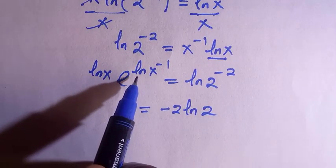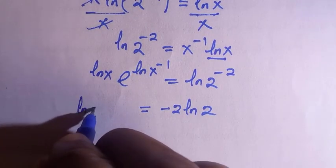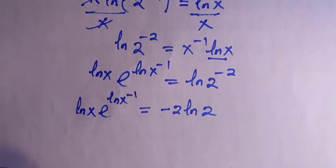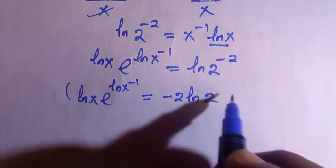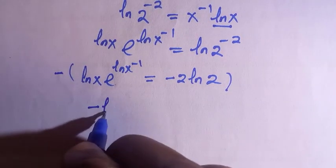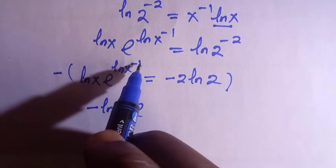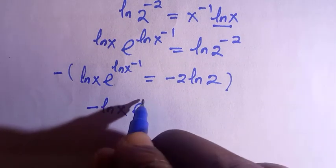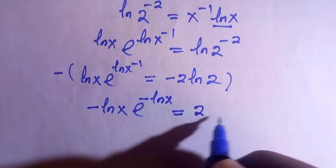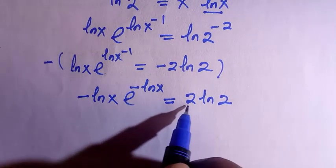For the x term, the power of minus 1 — applying the law of logarithm — becomes x to the power of minus 1. Introducing a negative gives negative ln of x. Since I introduced a negative, it affects the negative in front, so we have negative ln x equals 2 ln 2.